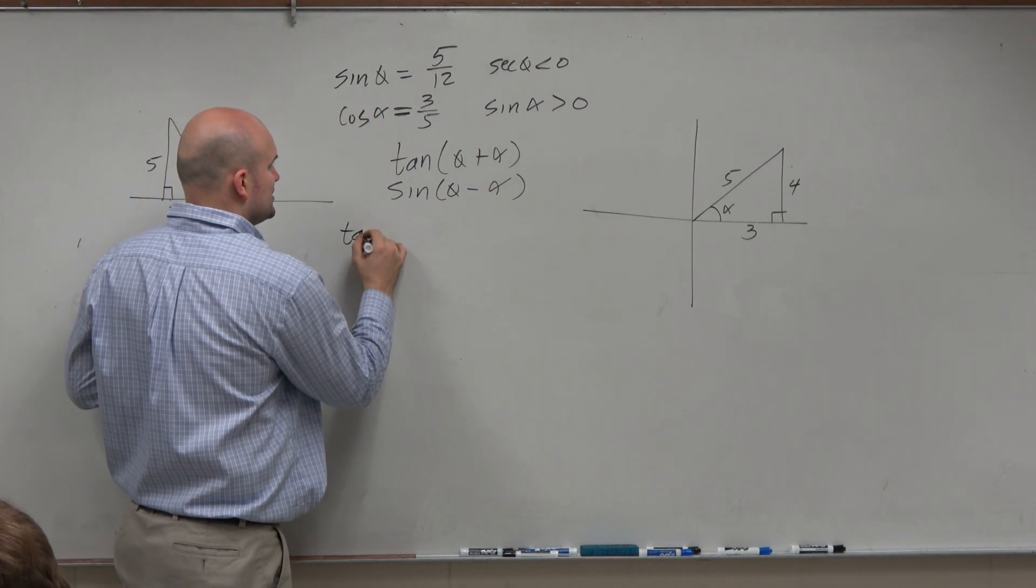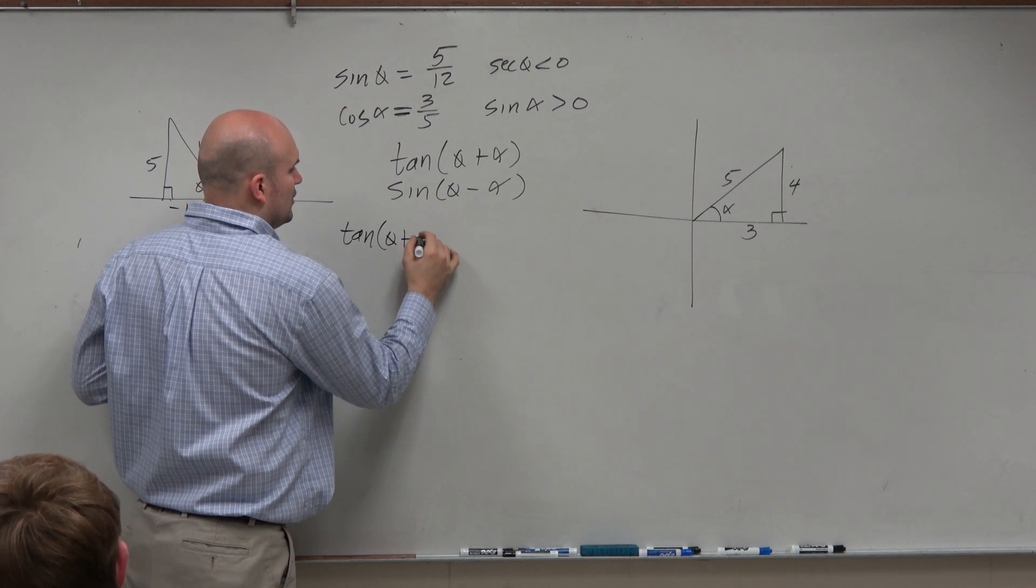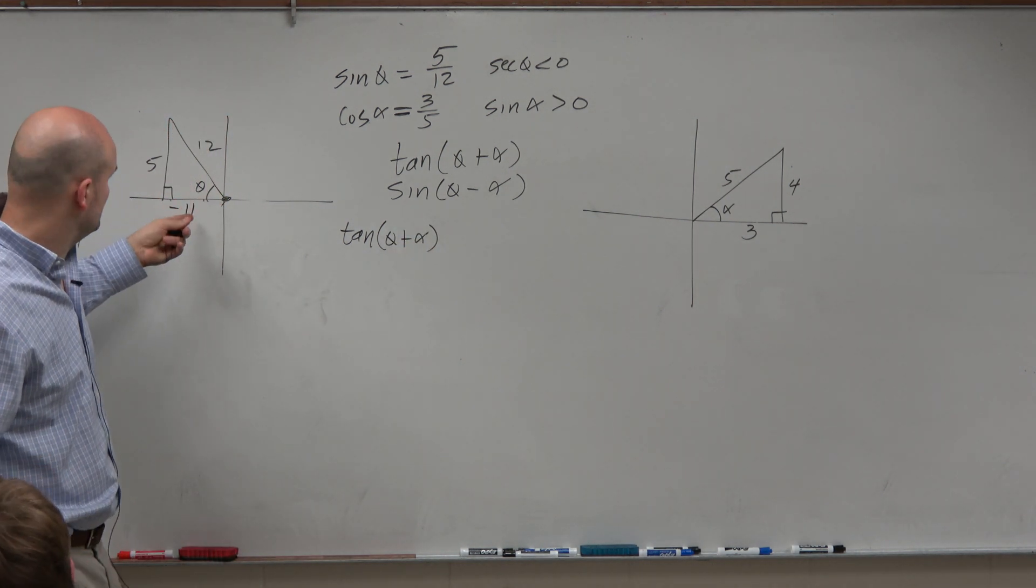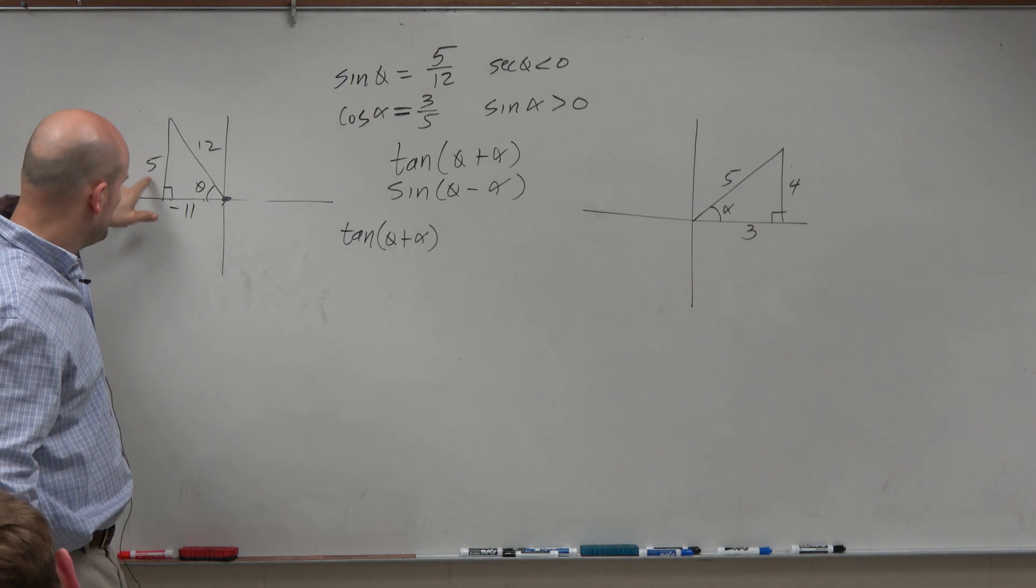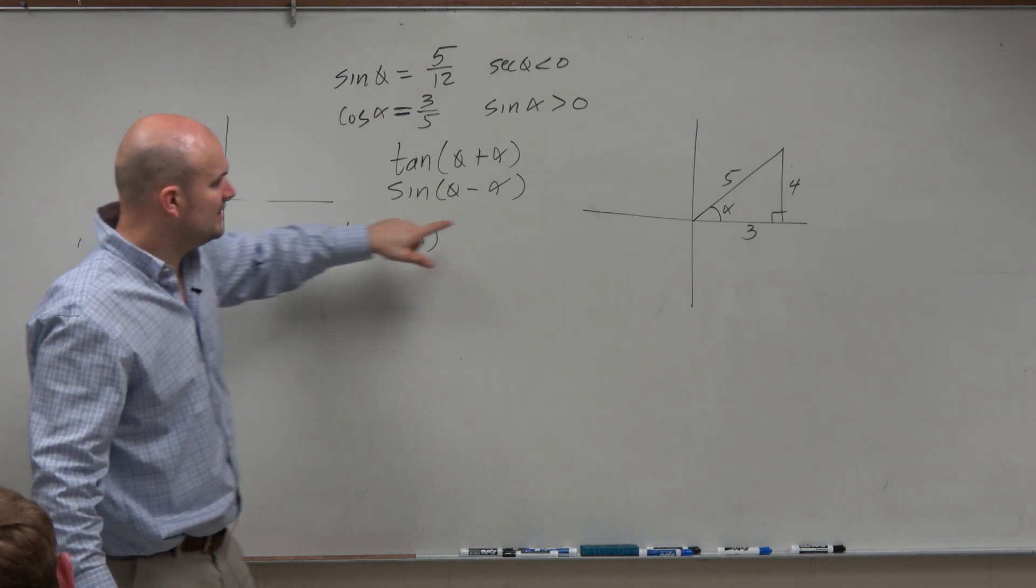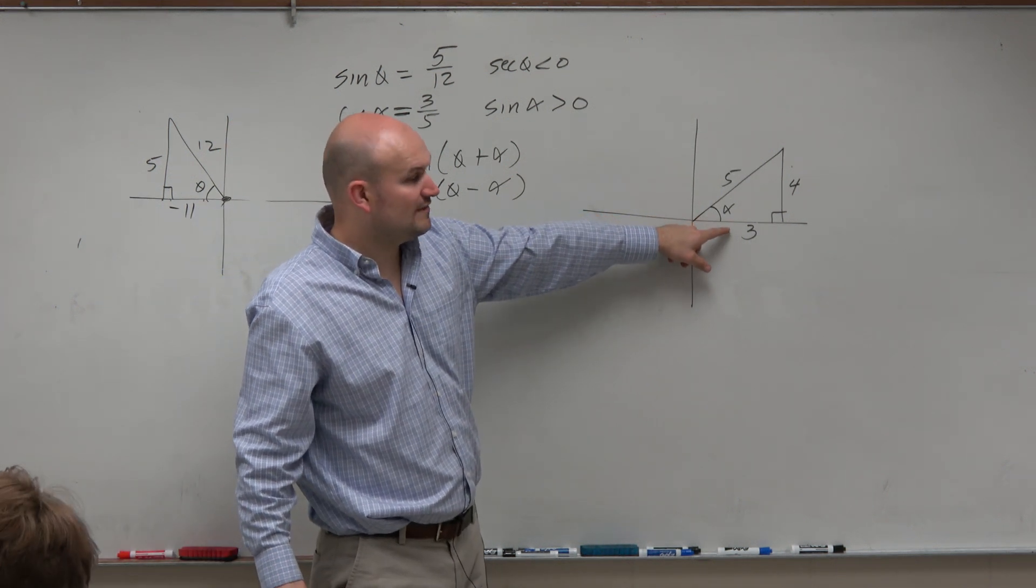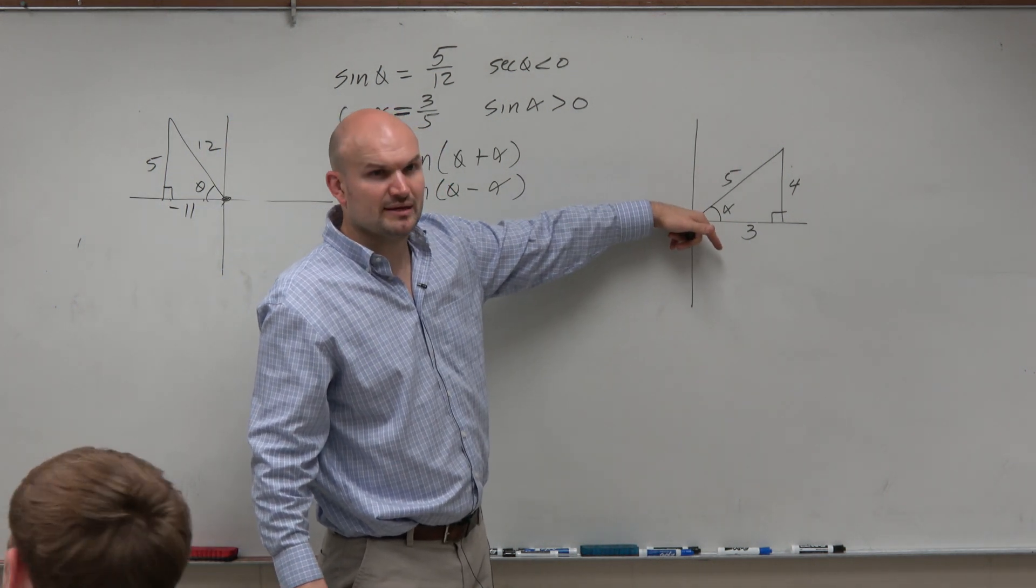So if I want to do the tangent of theta plus alpha, guys, can we figure out what the tangent of theta is? Yeah, it's just 5 over negative 11, right? Do we know what the tangent of alpha is? Of alpha is? It's 4 over 3, right?